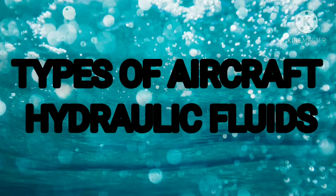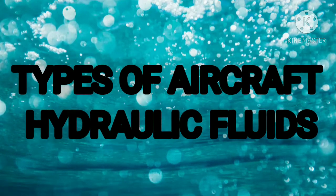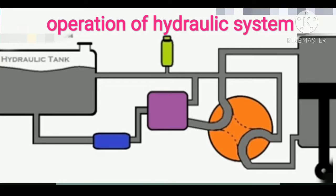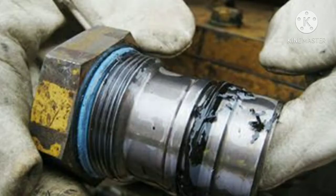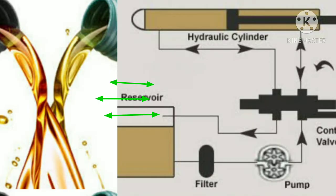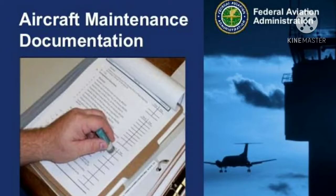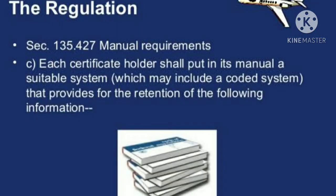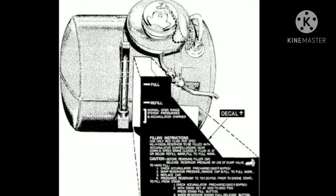Types of Aircraft Hydraulic Fluids. To make the hydraulic system operate properly and to avoid damage to non-metallic components, the correct fluid must be used. When adding hydraulic fluid to the hydraulic system, use the manufacturer maintenance manual for selecting the proper fluid. If the manufacturer maintenance manual is not available, use the instruction plate affixed to the reservoir or unit being serviced. The fluid to be used is mentioned on the instruction plate.